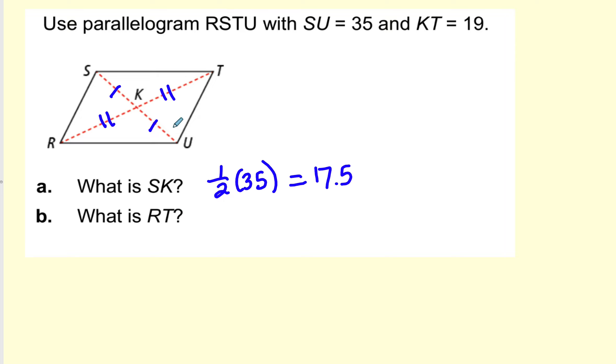Now RT, let's see, KT is, from here to here, is 19. So we know this other part is 19. So all the way across will be double that, and that'll be 38.